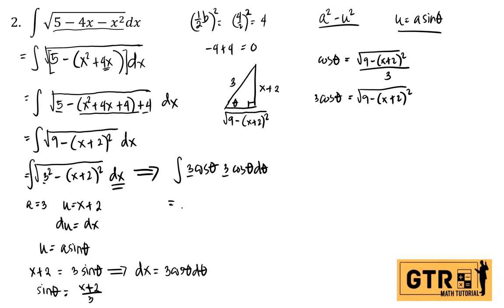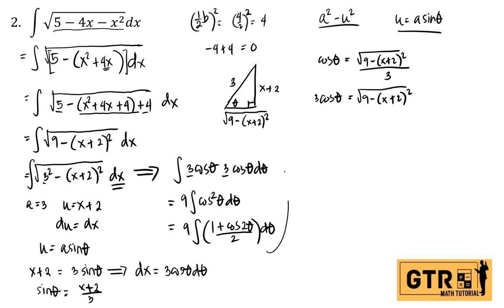Now substituting into the integral, we multiply the constants 3 and 3 to get 9. Moving the constant outside the integral we have 9 times the integral of cosine theta times cosine theta, which is cosine squared theta d theta. Since we have a power of cosine, we use the identity: cosine squared theta equals (1 plus cosine 2theta) over 2. So we have 9 times the integral of (1 plus cosine 2theta) over 2 d theta.